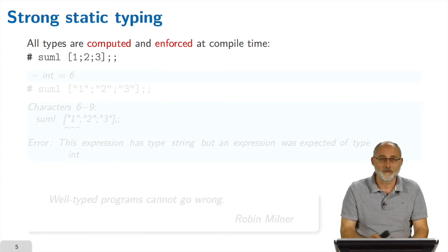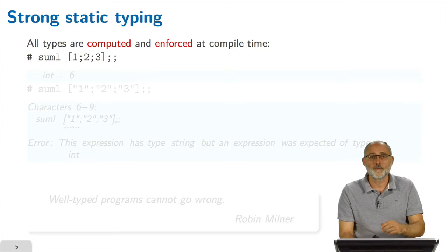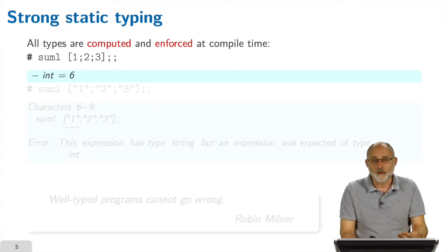And these types, which are inferred by the compiler, are actually computed and enforced at compile time, not at execution time. Let's see an example. For example, if I use this sumL function to sum the element of the list that contains one, two, and three, the compiler computes the result and says, yes, the result is an integer and its value is six. That's correct.